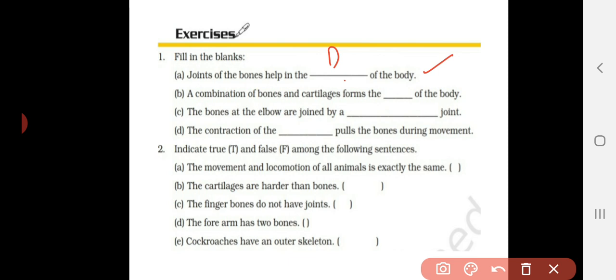Second question: a combination of bones and cartilage forms blank of the body. So our body has lot of systems like circulatory system, respiratory system, excretory system, digestive system. So lot of systems are there, but here the combination of bones and cartilage, what system do they form? Think it and write it here.